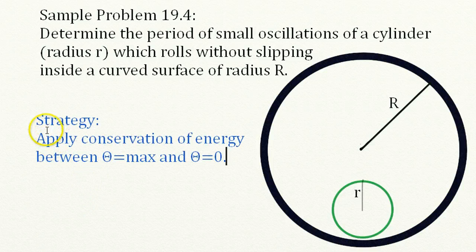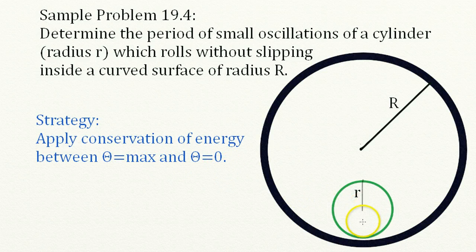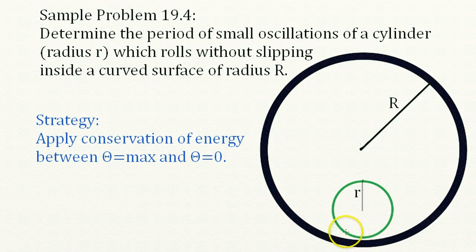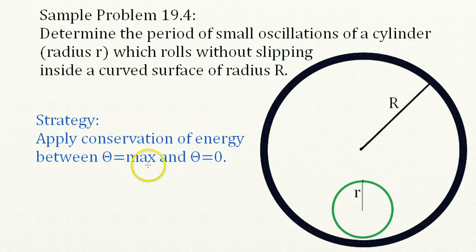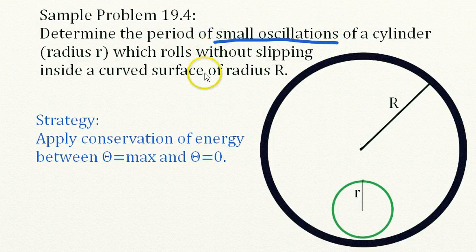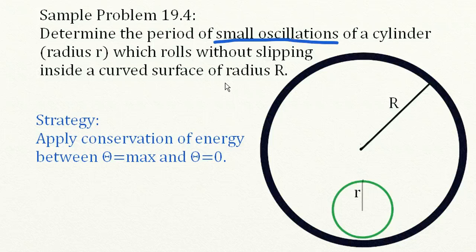Here's our strategy. We want to apply the conservation of energy between theta equals some maximum and theta equals zero. We'll characterize the rolling of this green cylinder by an angle theta, with theta equals zero at equilibrium. And the whole key here is we're talking about small oscillations, so we'll use small angle approximations where sine theta equals theta and cosine theta equals one minus theta squared over two.